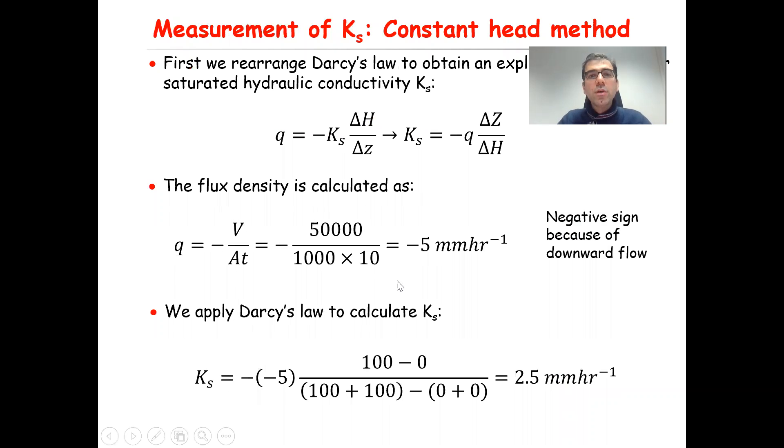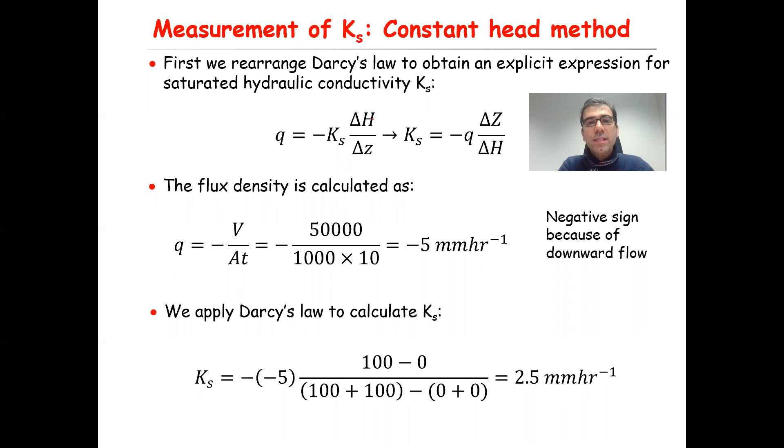You can simply write down Darcy's law: q equals minus Ks times delta H over delta z. You can rearrange this equation as Ks equals minus q times delta z over delta H. So now you have this one.